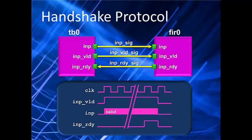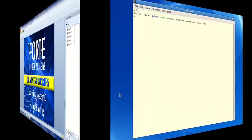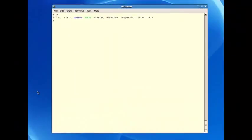The output will work the same way. When the FUR has a new output value to write, it will assert its output valid signal and wait for the test bench to indicate it's ready to read that value by returning an output ready signal. Now let's go back to the desktop to show the actual code to implement handshaking in the modules.